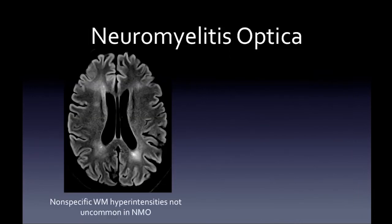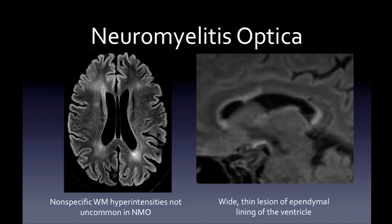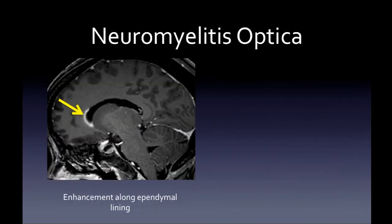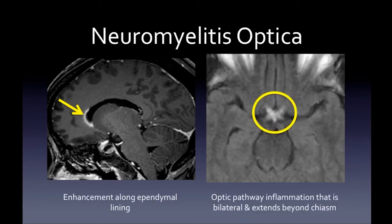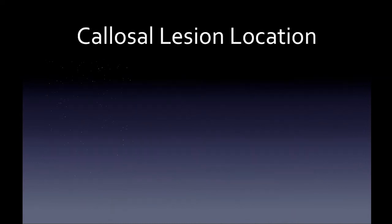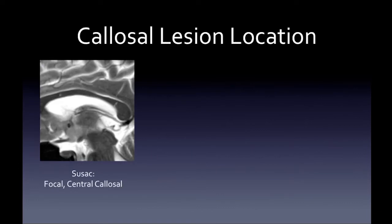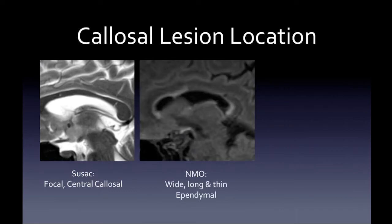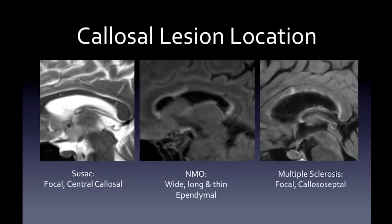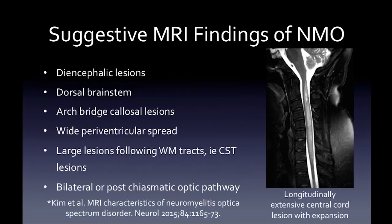In NMO, there can be nonspecific white matter hyperintensities. On the corpus callosum, NMO lesions are wide and thin along the ependymal lining of the ventricle, as opposed to the focal lesions at the callosal-septal interface seen in MS. Here is a case showing enhancement along the ependymal lining, and another case of chiasmatic or post-chiasmatic bilateral optic pathway neuritis — more suggestive of NMO. Compare callosal lesion location: Susac = focal central callosal; NMO = wide, long, thin ependymal lesions; MS = focal callosal-septal interface.